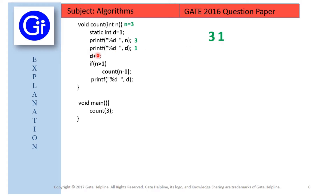In the next statement we auto-increment d, so d goes from 1 to 2. After that we have an if condition checking whether n is greater than 1. Since n is 3 and 3 > 1 is true, we enter the if block, which contains another call to the count function with parameter n minus 1.